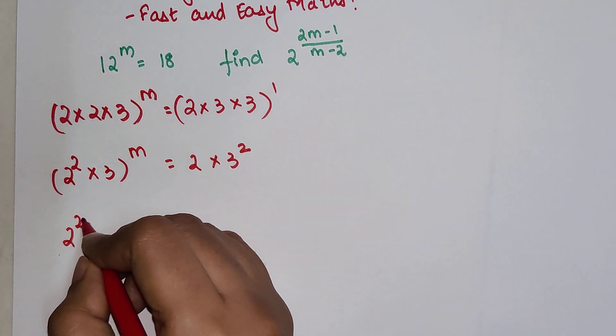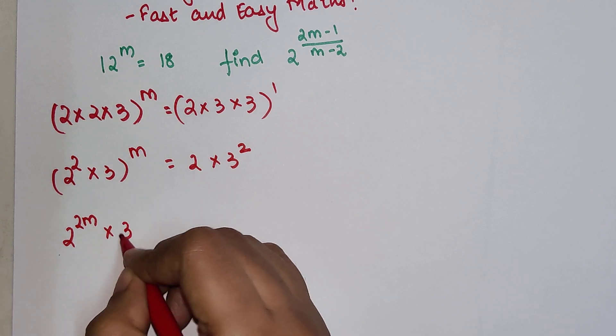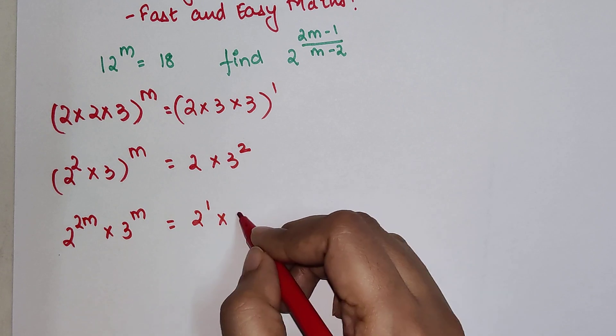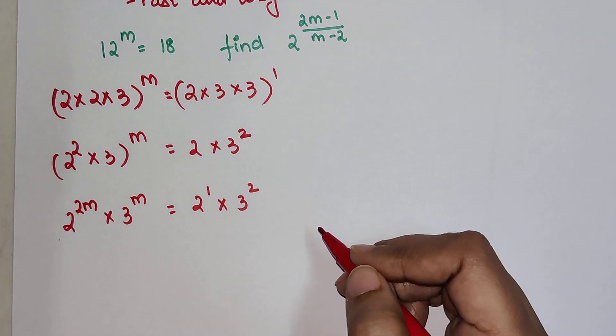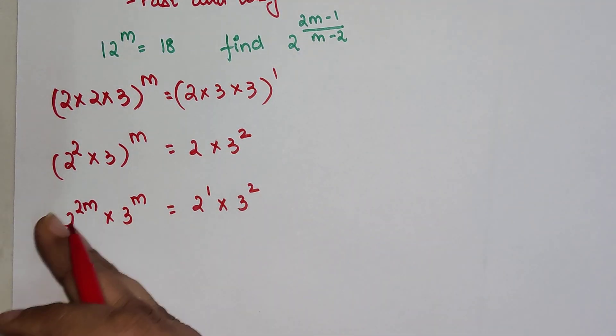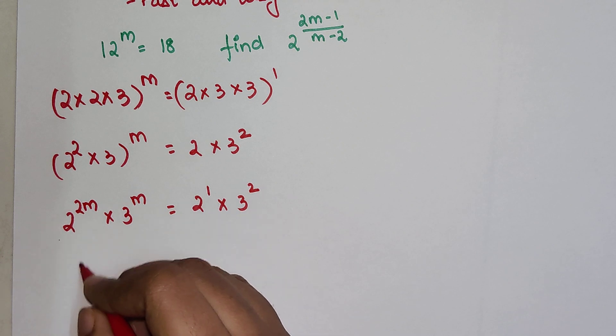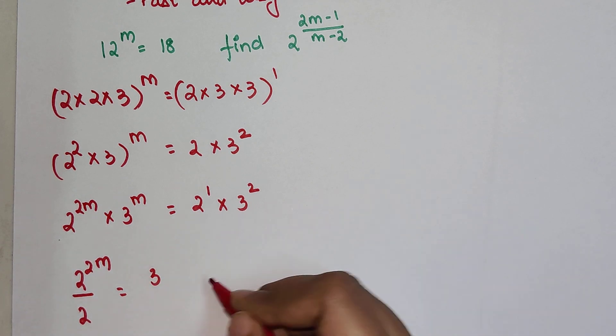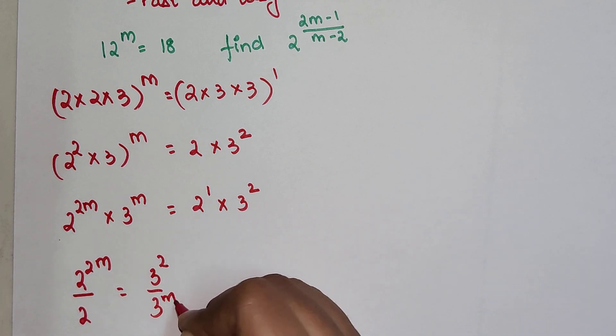This is nothing but 2 raised to 2m into 3 raised to m equals 2 raised to 1 into 3 squared. Now let's shift the 2's on one side and 3's on one side. So I will write 2 raised to 2m upon 2 equals 3 squared upon 3 raised to m.